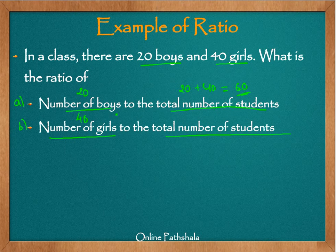Let us proceed to calculate this ratio. The other thing we are going to do is interpret that ratio, which is more important. Finding a ratio is one thing, and interpreting it is another. Let us look at Example A, which asks for the ratio of number of boys to the total number of students.